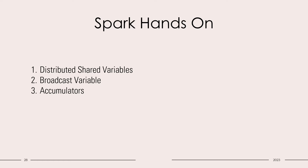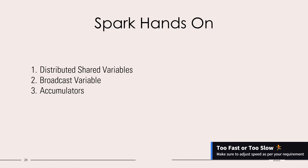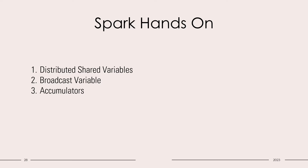Hello and welcome back. Now that we are working with Spark, today we will look into one of the most important topics, which are distributed shared variables. Spark has two types of variables that it offers in a distributed manner: the first one is broadcast variable and the second one are accumulators.